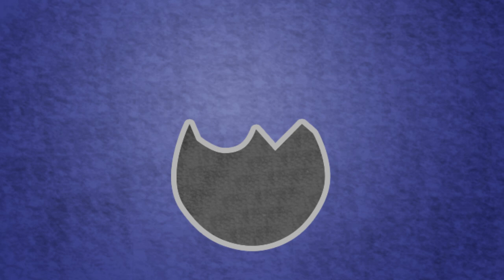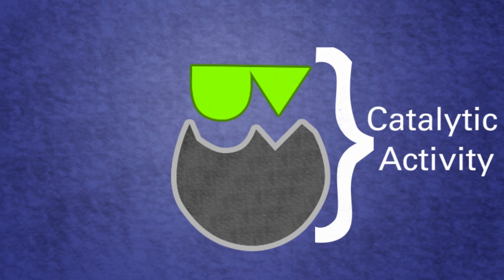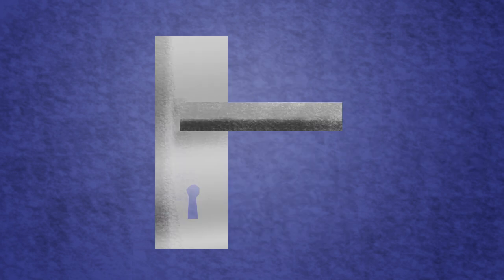An enzyme is rather unique in that its function is specific to a certain substrate. These enzymes contain an active site. This is where the substrate latches onto and where catalytic activity occurs. Think of it as a keyhole for a key. Only one key can fit in any given keyhole.